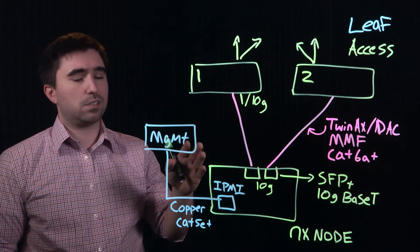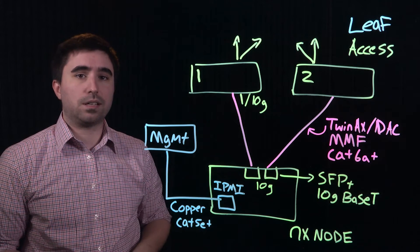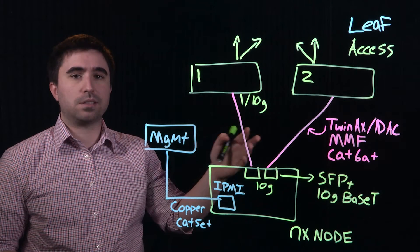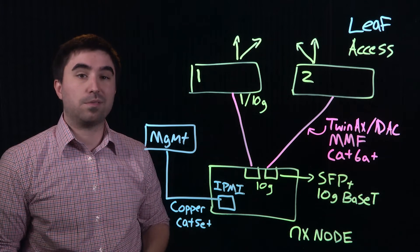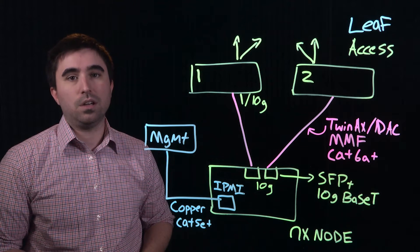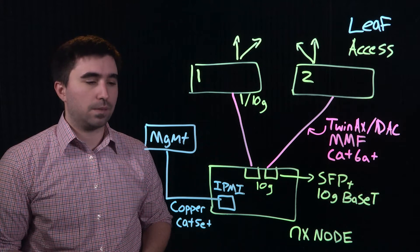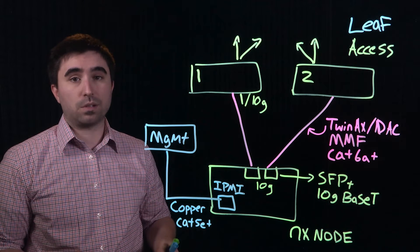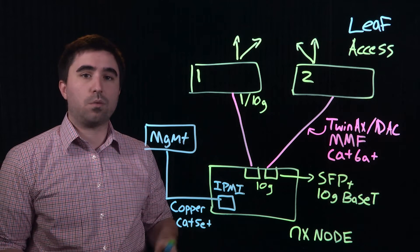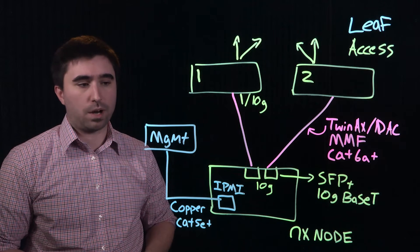Each Nutanix node has at least two 10 gig ports. Those 10 gig ports are almost always SFP Plus compliant ports. However, we've got configurations that are available using 10GBaseT. Most nodes have two ports. Some nodes can have four ports or even more depending on your own requirements.